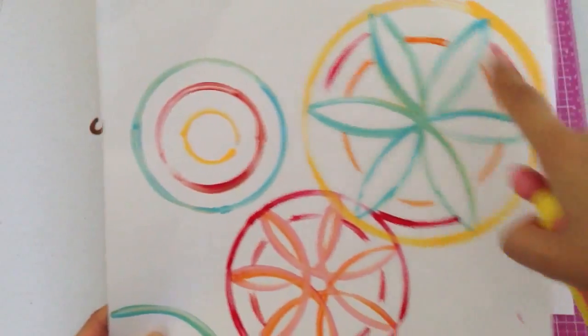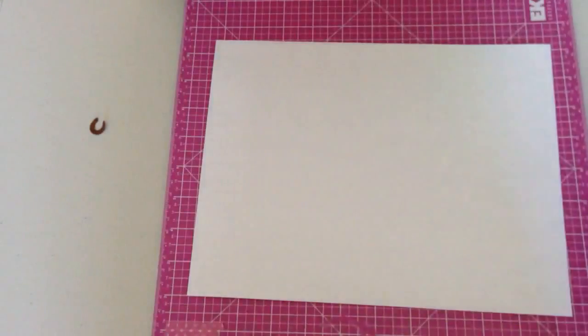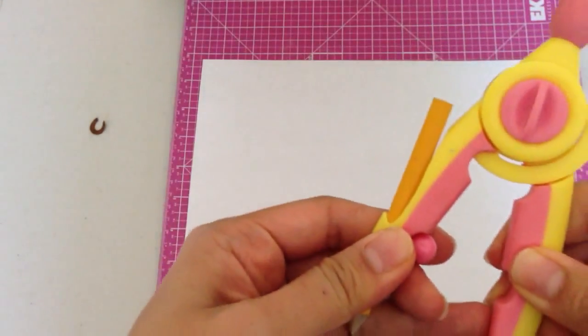I actually did these ones with acrylic paint, so I took a paintbrush and attached it to the compass. I'm just going to show you with a pencil right now because it's easier than dipping the paint in it.